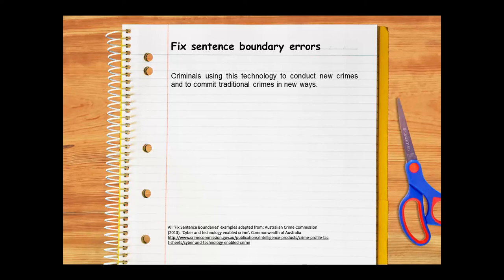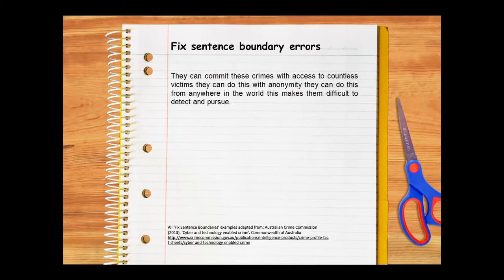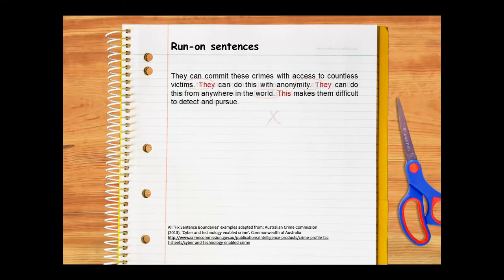How about this sentence? What's wrong here? This isn't a sentence at all — it's a sentence fragment. It doesn't contain a subject and a complete verb that shows past, present, or future time. Fix sentence fragments by joining them to another independent clause or by adding a subject and changing the verb to one that shows time. Let's take a look at another example. This is a run-on sentence. It includes several sentences that need to be split up. Here's one way of fixing the sentence using full stops.